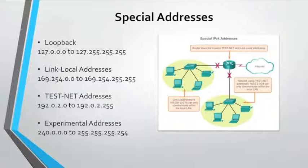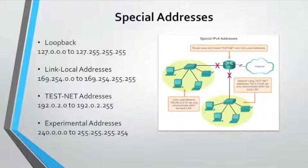Special addresses: there are certain addresses that cannot be assigned to hosts, and others that can be assigned but with restrictions on how those hosts can interact within the network. These include loopback addresses, link-local addresses, testnet addresses, and experimental addresses. The loopback address creates a shortcut method for TCP/IP applications and services running on the same device to communicate with one another. By using the loopback address instead of the assigned IPv4 host address, two servers on the same host can bypass the lower layers of the TCP/IP stack. You can also ping the loopback address to test the configuration of TCP/IP on the local host.